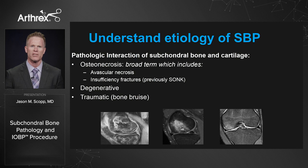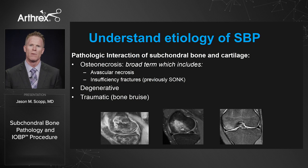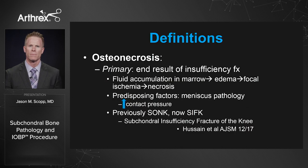Let's understand the etiology of subchondral bone pathology before we understand the treatments. It's the pathologic interaction of subchondral bone and cartilage. Osteonecrosis is a very broad term — it is not a term that applies to every lesion. Osteonecrosis includes avascular necrosis. It also includes an insufficiency fracture, previously termed SONK or SPUNK — a term we want to see transitioned away. Other bone marrow lesions are caused by either degenerative or traumatic bone bruises.